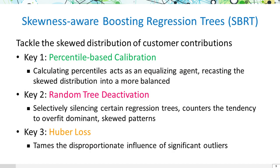We propose Skewness-Aware Boosting Regression Trees, or SBRT. It has three novelties. First, we use percentile-based calibration to transform skewed distributions into more uniform ones. Second, random tree deactivation prevents overfitting by disabling some regression trees. Lastly, we employ Huber loss to mitigate the impact of outliers.